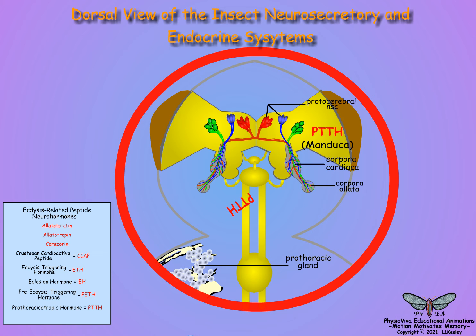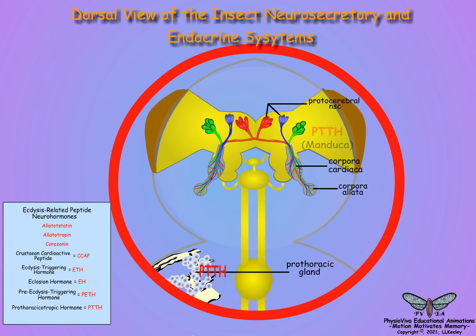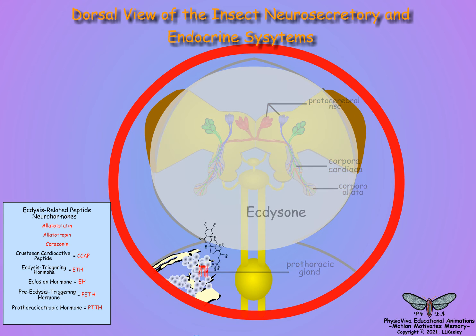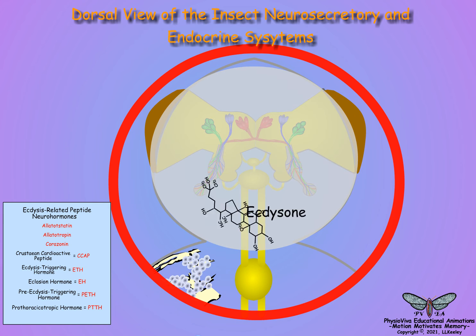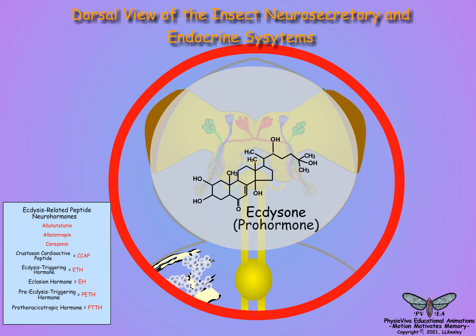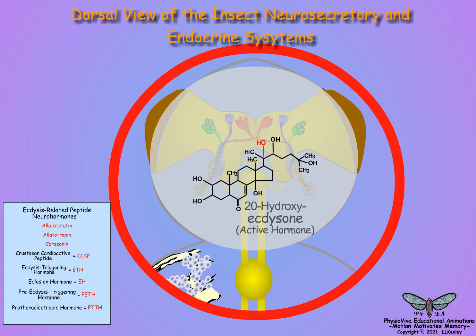The prothoracicotropic hormone stimulates the prothoracic glands to synthesize and release ecdysone, a pro-hormone for the active molting hormone. Peripheral tissues — especially the fat body, intestine, and Malpighian tubules — convert ecdysone to 20-hydroxyecdysone, which subsequently activates the epidermal cells to start the molting cycle.